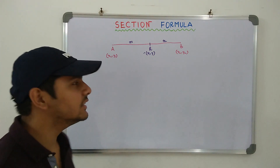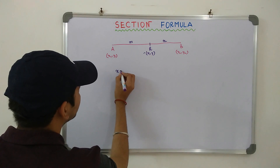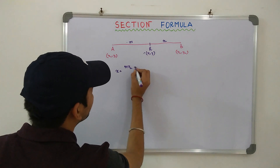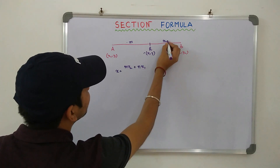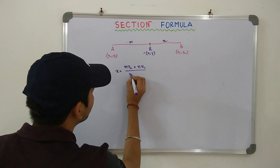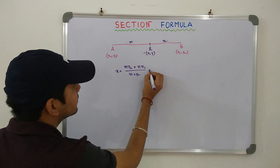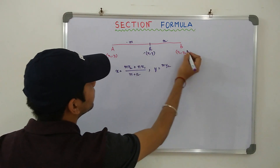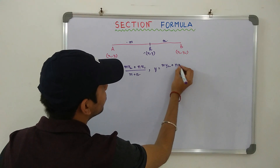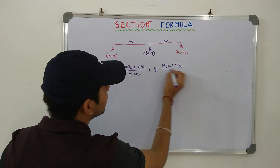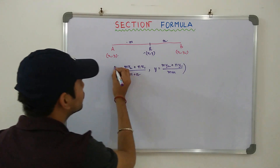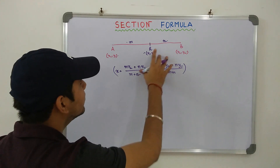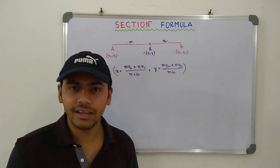What is that formula? It is very simple. It is x equal to m into x2 plus n into x1, divided by m plus n. Similarly for the y coordinate: y is equal to m into y2 plus n into y1, divided by m plus n. This is the Section Formula, and it gives us the ability to find the coordinate of a point that divides a given line segment in a given ratio.